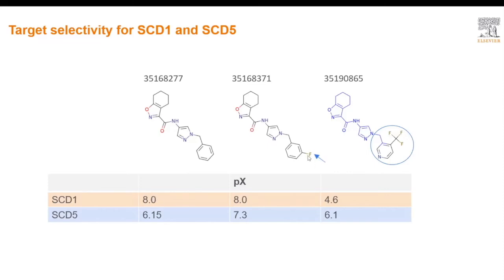Addition of fluorine to the benzene ring at the end of the molecule retains activity against SCD1, but decreases the selectivity against SCD5. Addition of a trifluoromethyl group, replacing the benzene ring, reduces activity against SCD1 and inverts the selectivity against SCD5.